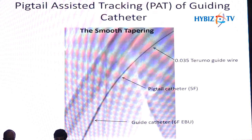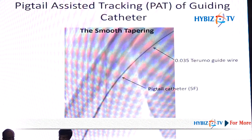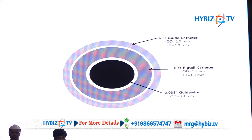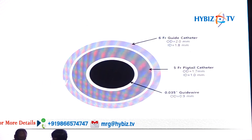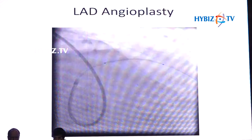This was the basic mechanism of benefit. You can see there is a smooth tapering — this is the guide catheter, and this is the pigtail and wire — making a smooth tapering, avoiding the razor blade effect. In the cross-sectional view, the outer layer is the guide catheter, and between the guide wire and guide catheter, the pigtail catheter obliterates that space. The radial angiogram after the procedure showed no injury from the procedure.